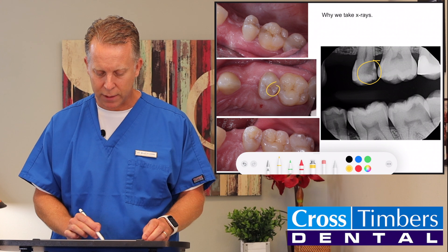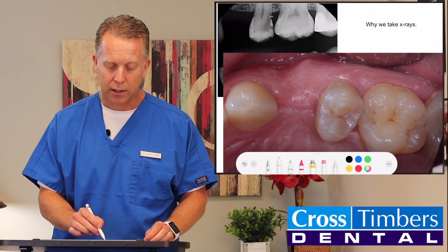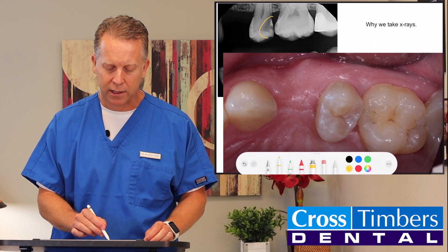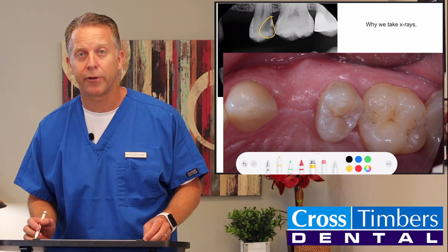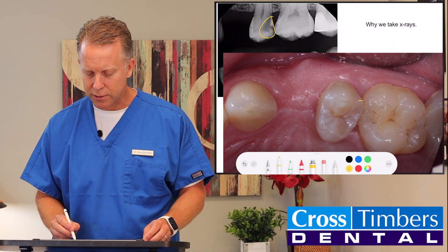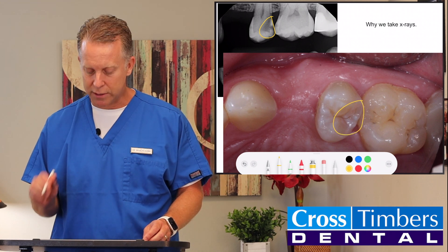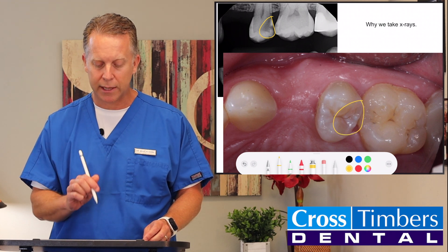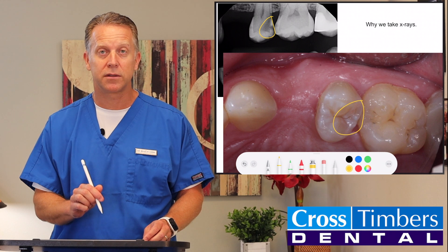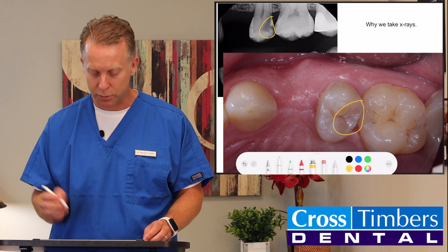And that is this tooth right here. Here is that cavity — it's really big. It's taking up almost a third of the tooth. And when we look directly at that tooth, you don't really even see a cavity from the surface. So the reason why we take x-rays in this case is to try to find cavities that we can't see otherwise.